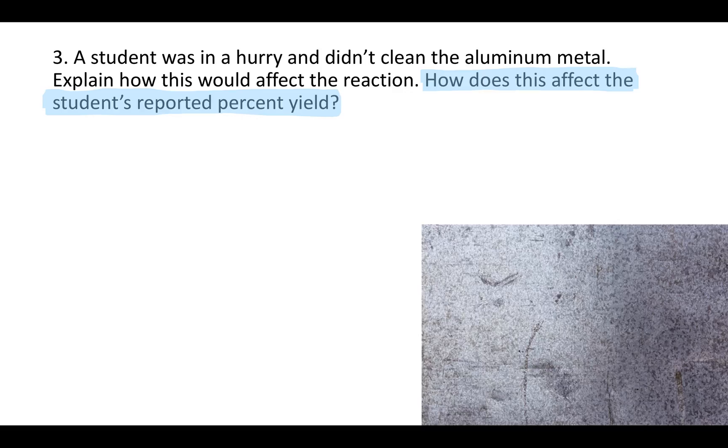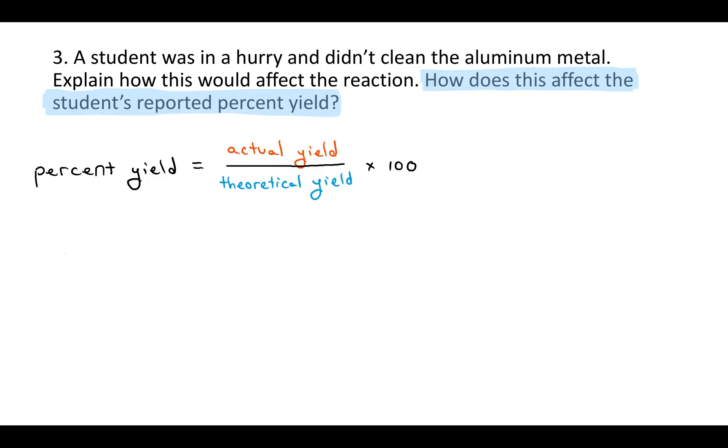And then how does this affect the student's reported percent yield? Well remember that percent yield is the actual yield over the theoretical yield times 100. So let's consider each of these things one at a time. First, let's consider the theoretical yield. The theoretical yield is what you would predict that you would get at the end of an experiment if you didn't lose any of what you started with, either through evaporation or spilling or sticking to a glass container or sticking to the filter paper. If you had 100% efficiency in the reaction, what you would predict you'd get, that's the theoretical yield.